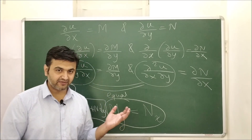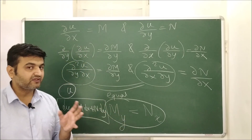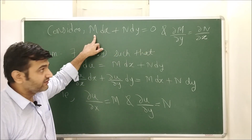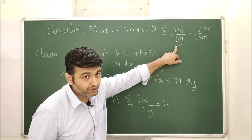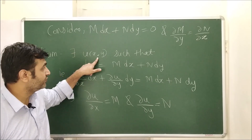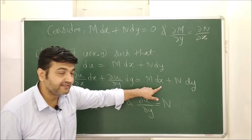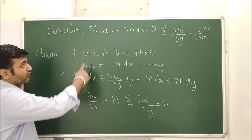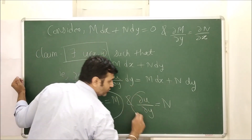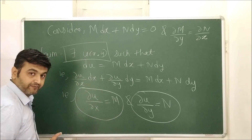Proofs can be constructive, by contradiction, or by induction — this is a constructive proof. Here is the scenario: M and N are functions of x and y, and we are given that ∂M/∂y = ∂N/∂x. We want to prove equation 1 is exact. That means we must show there exists a differentiable function u such that its total derivative equals M dx + N dy, i.e., ∂u/∂x = M and ∂u/∂y = N. We need to construct u satisfying these two conditions.